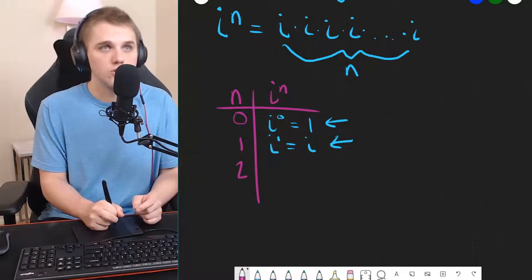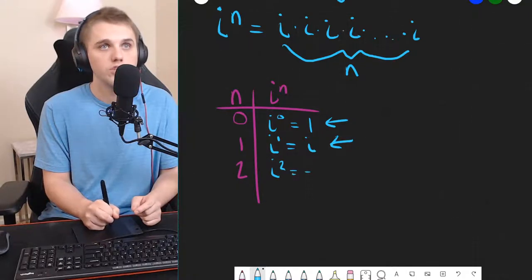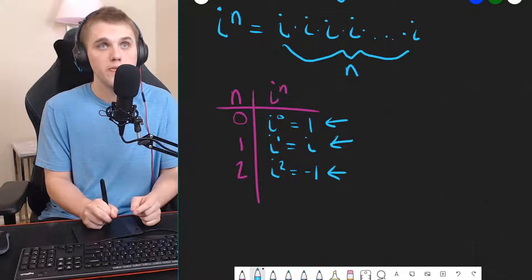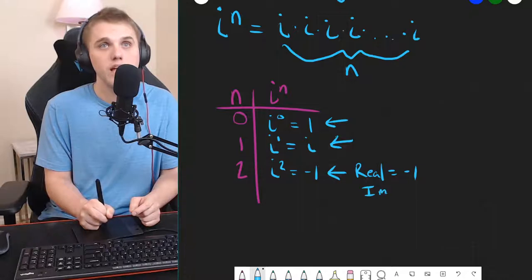When n equals 2, we have i squared, which is negative 1. Here, the real part is negative 1, and the imaginary part is 0.